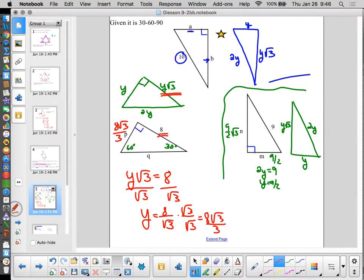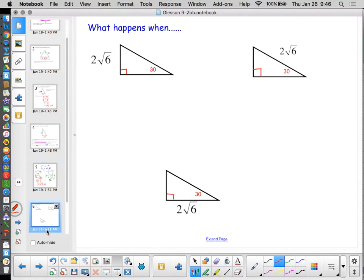So the hypotenuse would be 2 times that. 2 times 8 is 16 root 3 over 3. So there's our process. It's really not a pattern so much in this time. It's just doing the math.